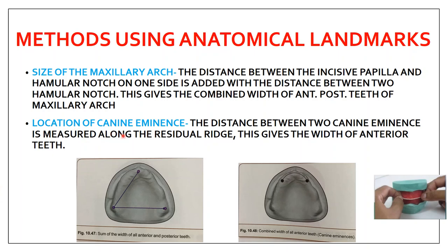The next method is the location of the canine eminence. The distance between the two canine eminences is measured along the residual ridge, and this gives the width of the anterior teeth. This is the most commonly used method in colleges — a thread is placed from one canine eminence to the other, and that length is placed against the set of teeth to determine where the canines fall.